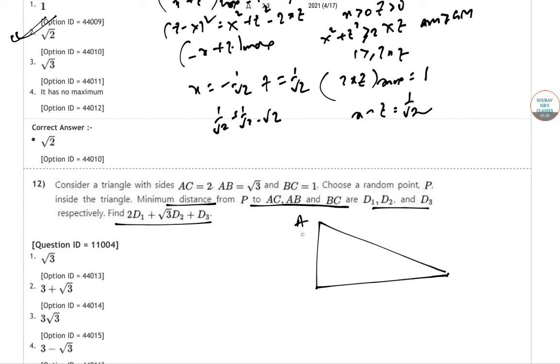So if this is A, this is B, this is C. This is D1, this is D2, and this is D3. This is P. This is 2, this is root 3, and this is 1.